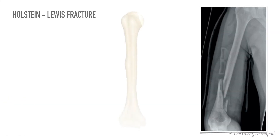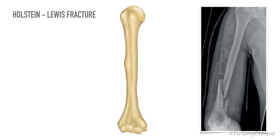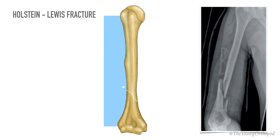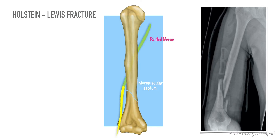The Holstein-Lewis fracture is a humeral shaft oblique fracture at the junction of the middle and distal thirds of the bone, which may entrap or lacerate the radial nerve as it passes through the intermuscular septum.